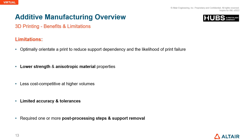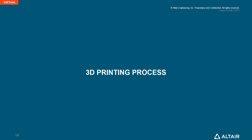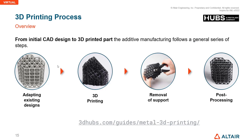Limitations of 3D printing include lower strength and anisotropic material properties, less cost-competitive at higher production volumes, limited accuracy and tolerances, and processes that require post-processing steps including support removal. In a simple overview, the 3D printing process goes from existing designs to 3D printing, then support removal and post-processing.